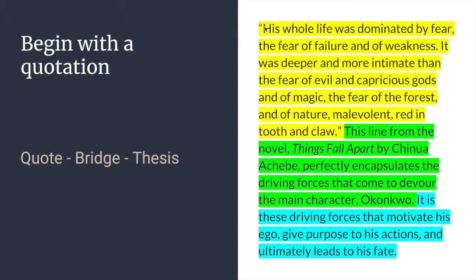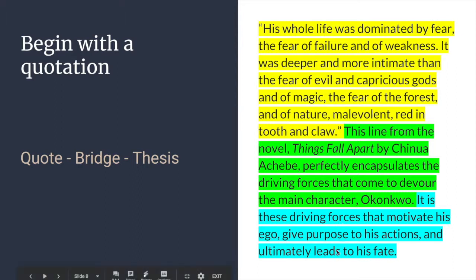Hopefully you noticed that this introduction really divides into three different sections. We start with a quotation, and then after the quotation we have a bridge that helps us move away from the quotation and into the actual content we're going to be talking about. The quote is 'his whole life was dominated by fear, the fear of failure and of weakness.' Then we have to move from that quote into the ideas we want to address. The bridge says: 'this line from the novel Things Fall Apart by Chimamanda Achebe perfectly encapsulates the driving forces that come to devour the main character Okonkwo.'